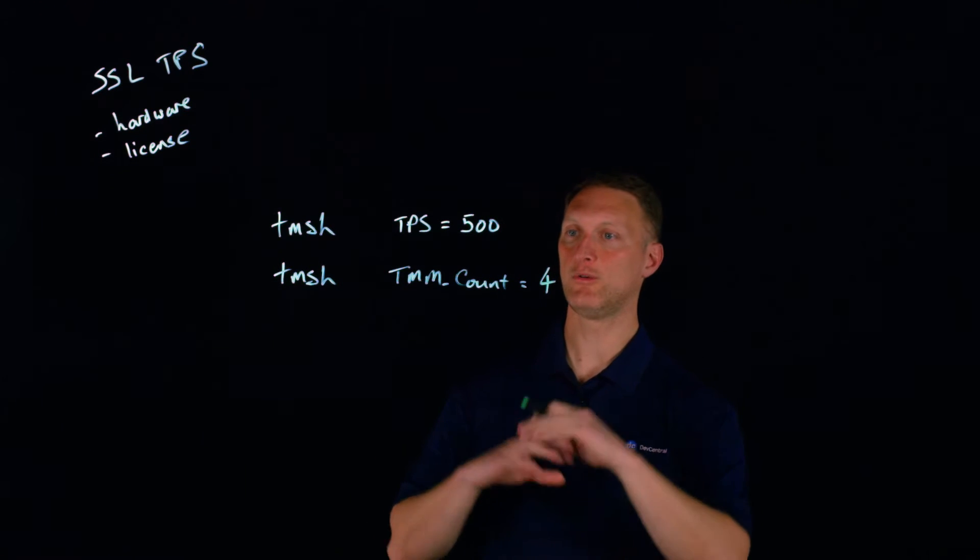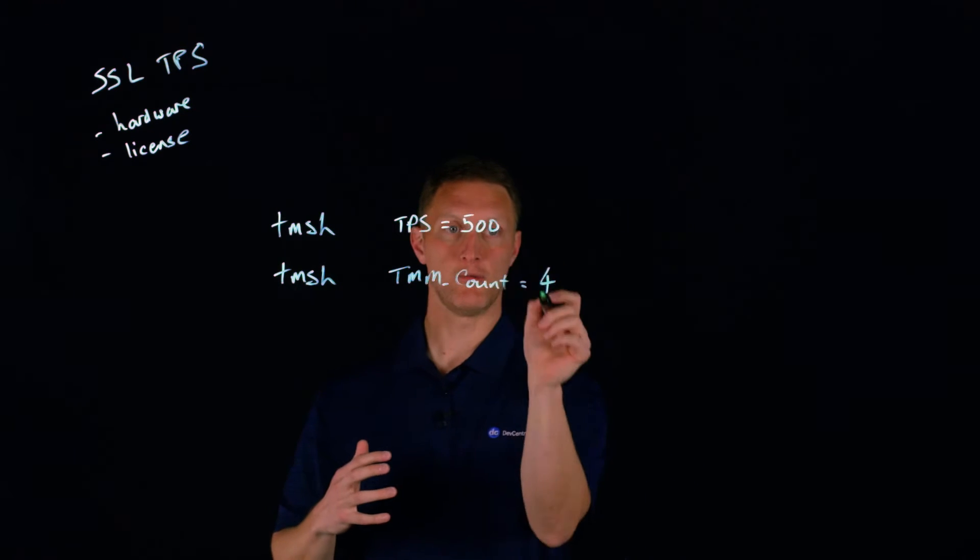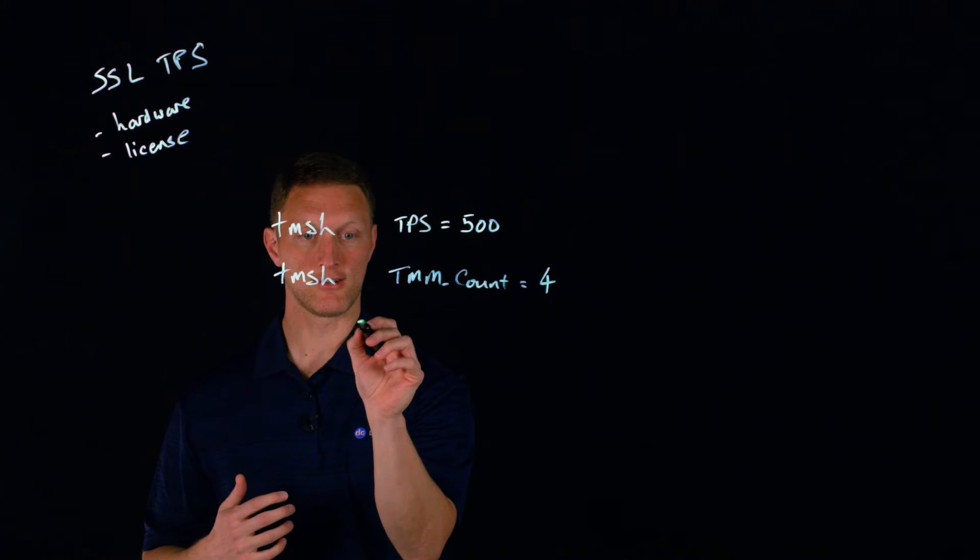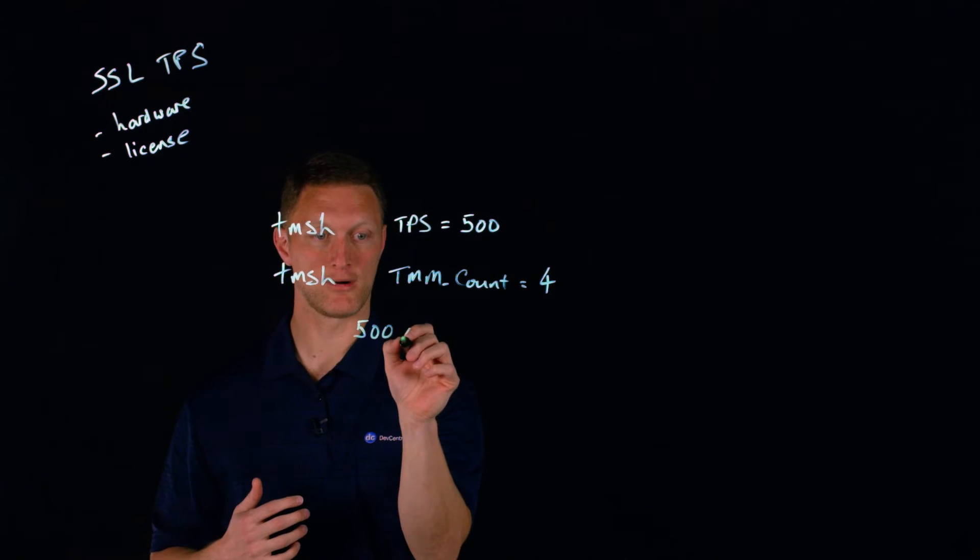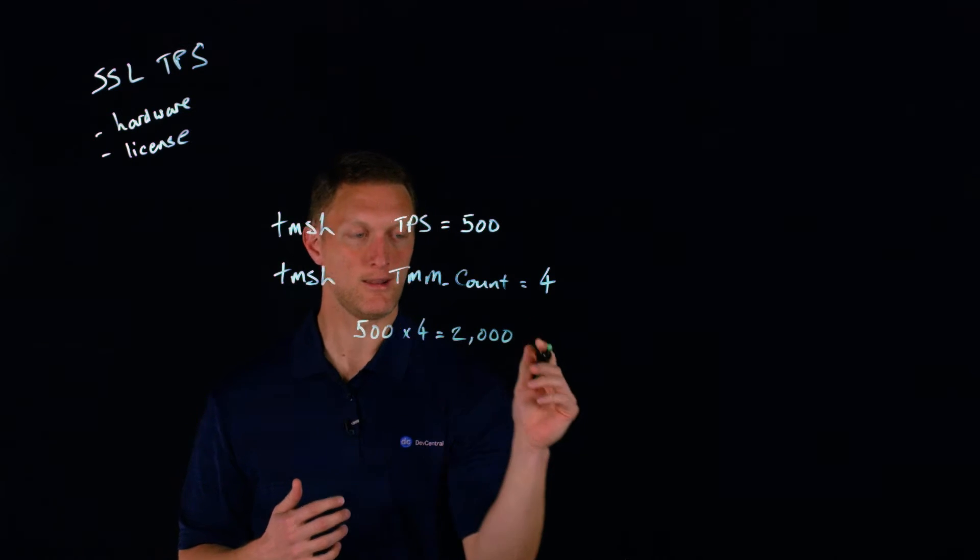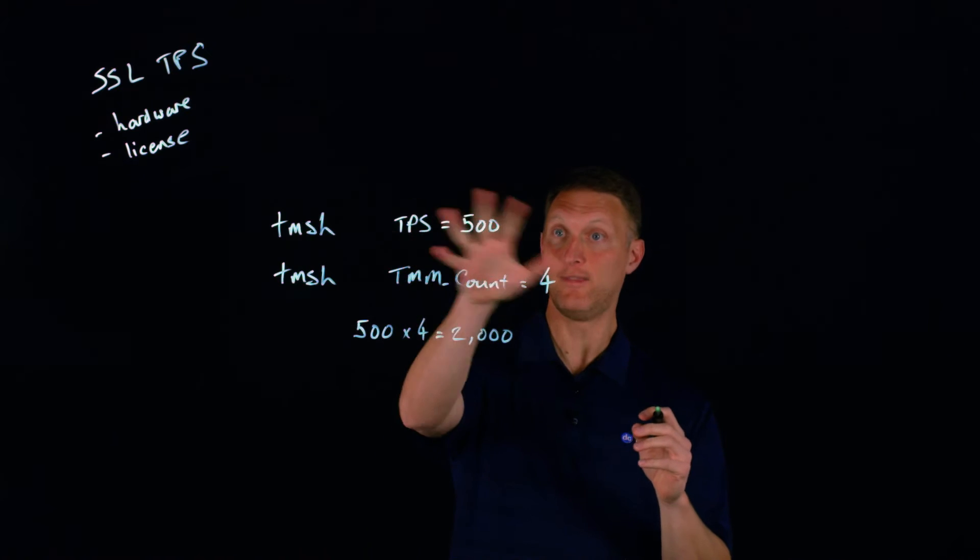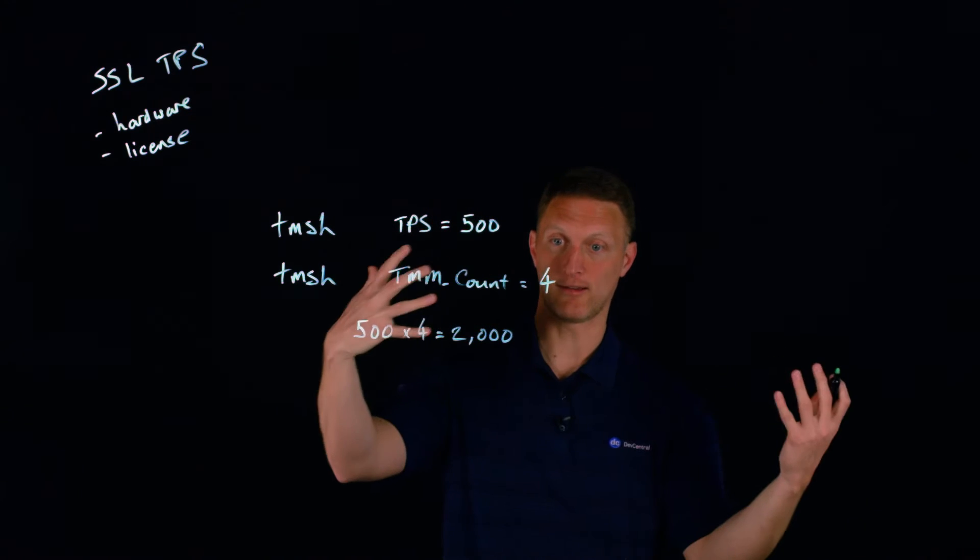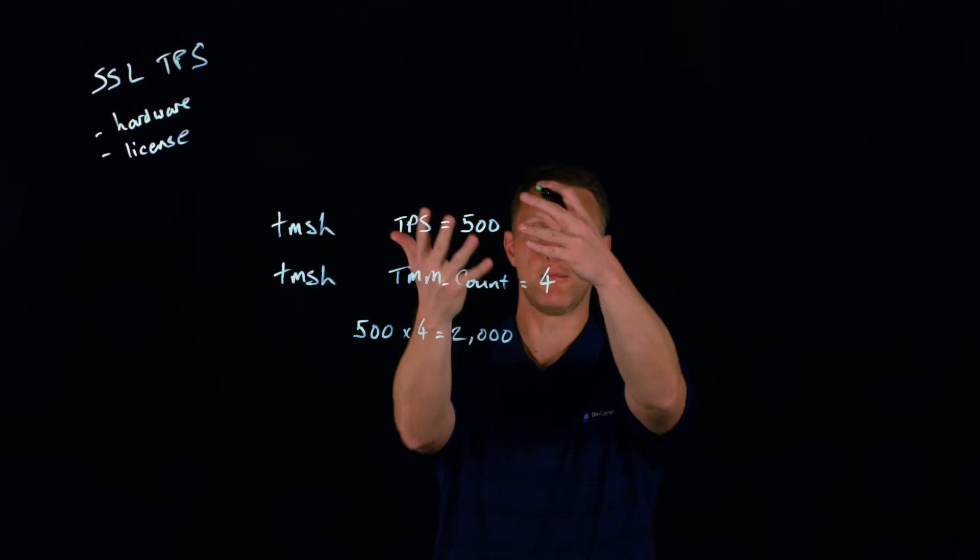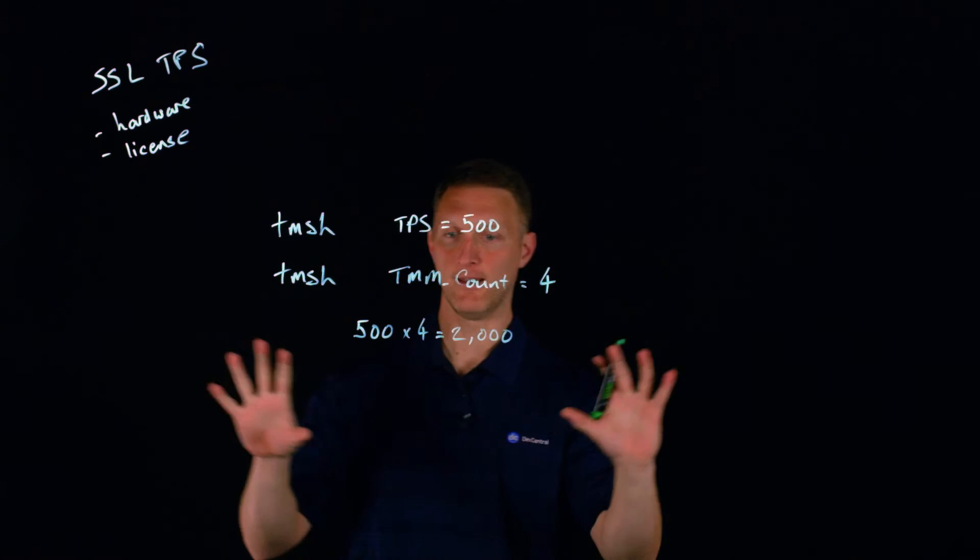What you do on an aggregate total transactions per second perspective is you actually multiply these two together to get the total number that you would be able to have in your entire Big IP system. So in this case you would get 2,000 transactions per second total, because you have four different TMMs, each of which can conduct 500 per second.